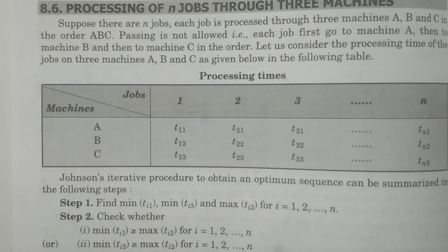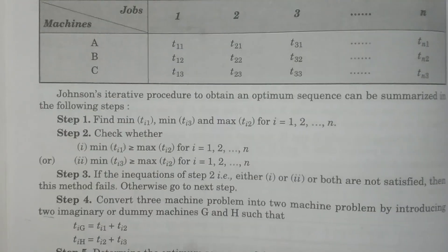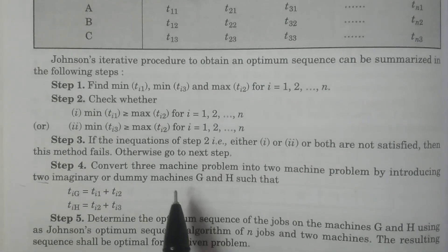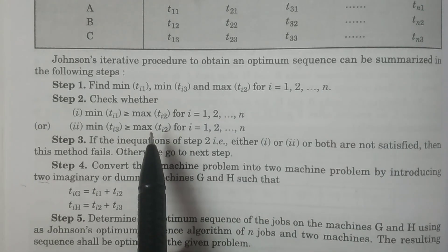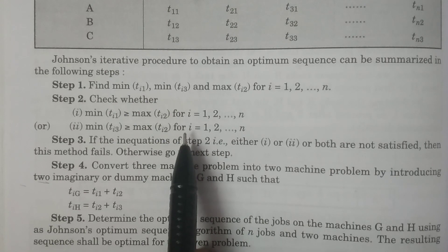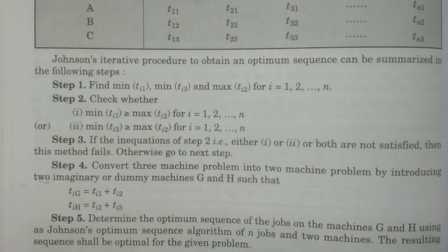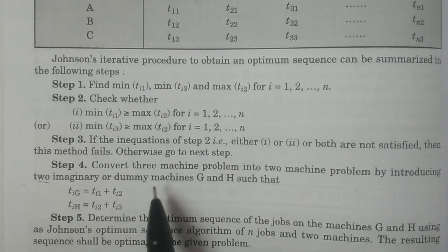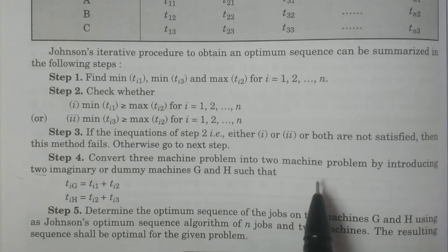If both conditions are not satisfied, the method fails and we cannot apply this procedure. However, if either condition one or condition two or both are satisfied, then we proceed to the next step — step four — which is to convert the three-machine problem into a two-machine problem.